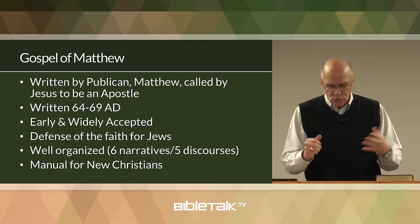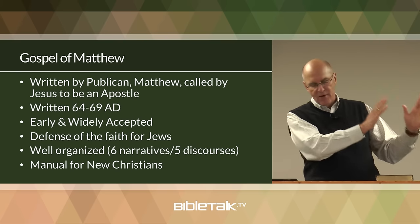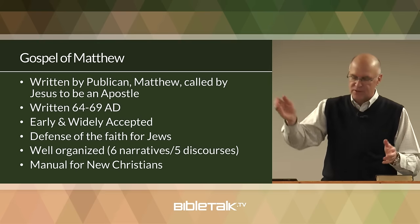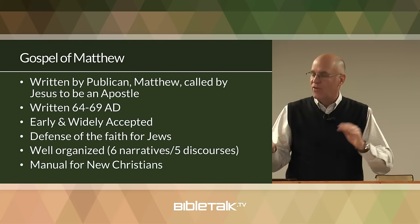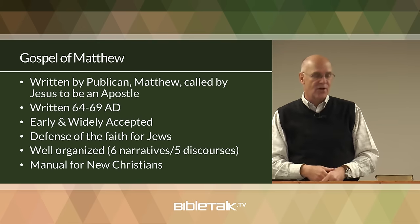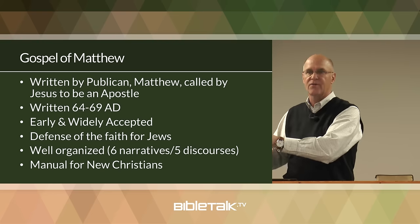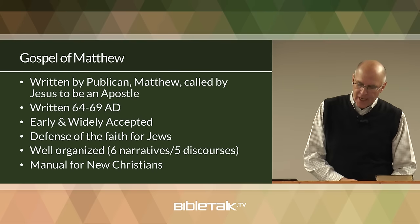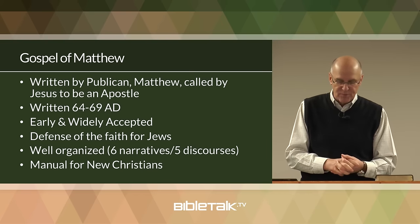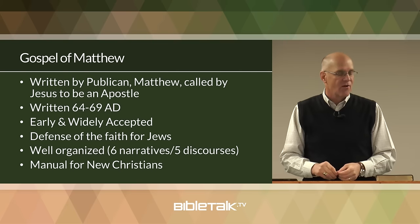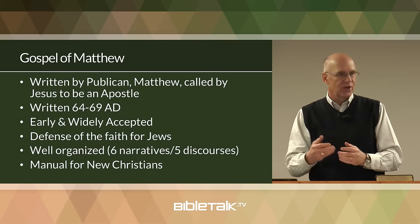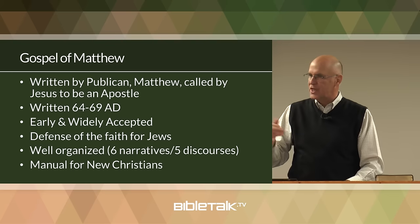Matthew's work is extremely well organized, consisting of six narrative sections alternating with five discourses. Narratives are when someone describes he went here, he said this, he did that. The discourses are conversations, dialogue, and monologues that Jesus has. So you have a narrative, a discourse, a narrative, a discourse — a very well organized work. This organization made the book easier to study and memorize, and consequently it was often used by the early church as a training manual for new Christians.